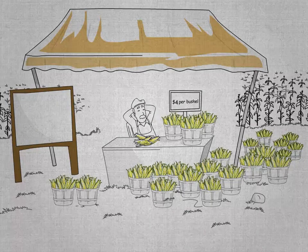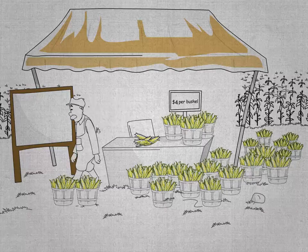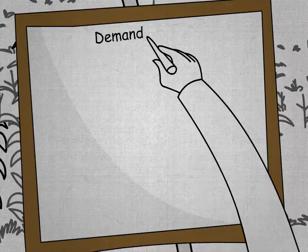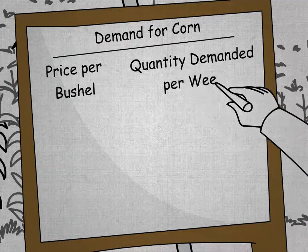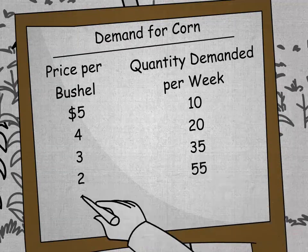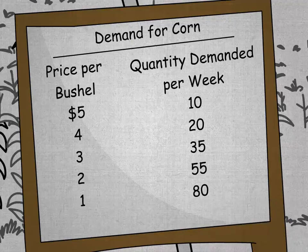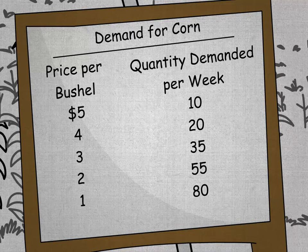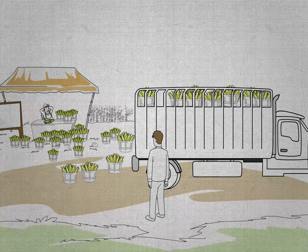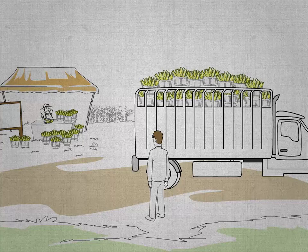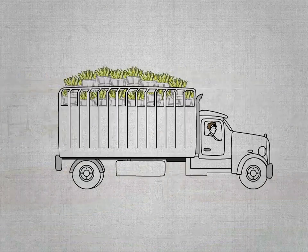Let's consider this hypothetical demand schedule for a single consumer purchasing bushels of corn. This table shows how the various prices of corn and the quantity of corn a particular consumer would be willing and able to purchase at each of these prices are related. At $5 per bushel, the consumer is willing and able to buy 10 bushels per week, but at $4, the consumer is willing and able to buy as many as 20 bushels per week, and so forth. Thus, demand is simply a statement of a buyer's intentions with respect to the purchase of a product.